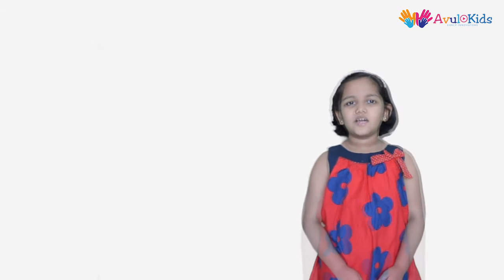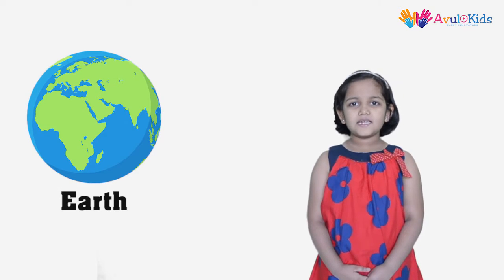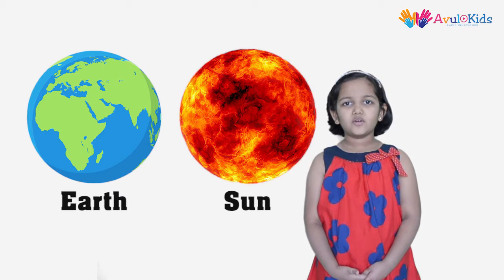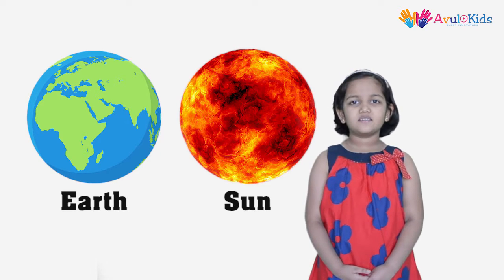All the objects that have mass have gravity, but objects like the earth and sun have more gravity than others. How much gravity an object has depends on how big it is. Just imagine how our earth would have been without gravity.